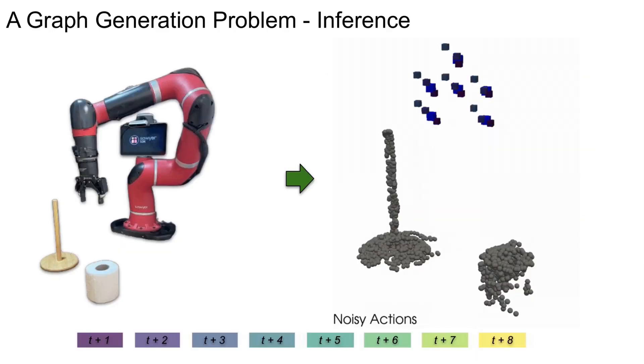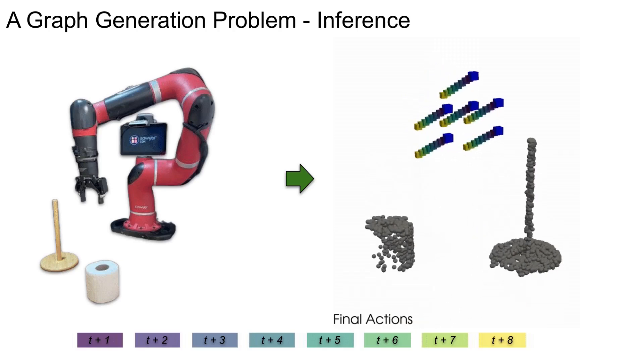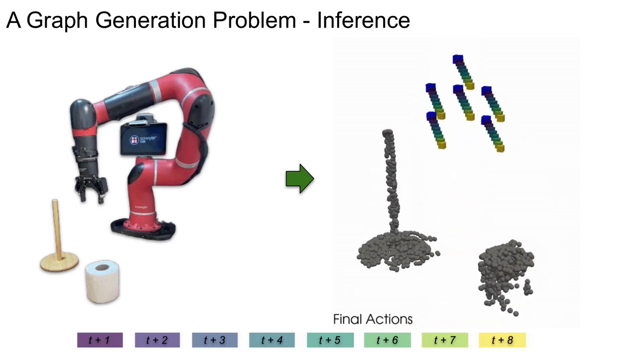At test time, we can then sample actions from a normal distribution and iteratively refine them directly in the graph space using this learned diffusion process until they represent the desired actions, in this case moving towards the paper roll.